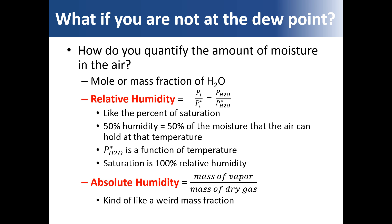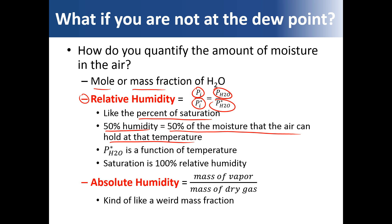To quantify the amount of moisture in the air, we use a couple of terms. Relative humidity is the partial pressure of water divided by the vapor pressure — it's like a percent of saturation. At 50% humidity, the air holds 50% of the moisture it could hold at that temperature. Note that the denominator, the vapor pressure, is a function of temperature, and saturation occurs at 100% relative humidity. Absolute humidity, on the other hand, is the mass of the vapor divided by the mass of dry gas.